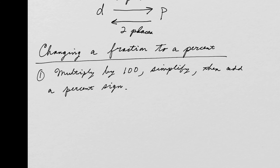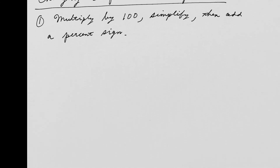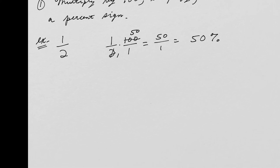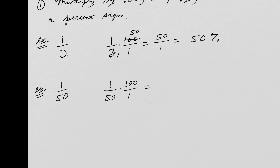For example, what is one half as a percentage? Remember the rule: multiply by 100. Think of 100 as 100/1. We can simplify: 2 goes into 2 once and into 100 fifty times. So one times 50 is 50, and the answer is 50%. What about 1/50 as a percent? Take 1/50 times 100, which simplifies to 2. So 1/50 is 2%.